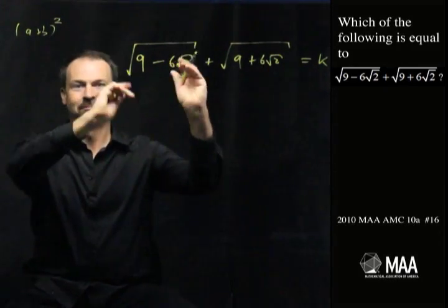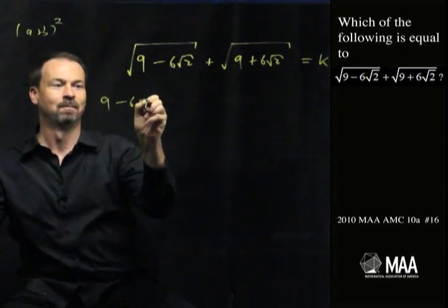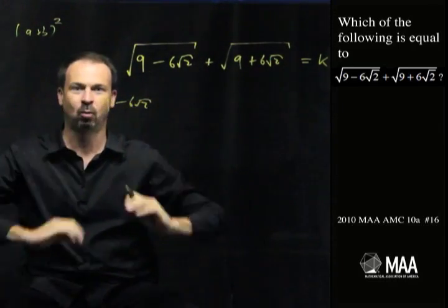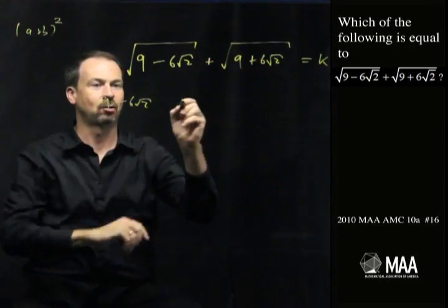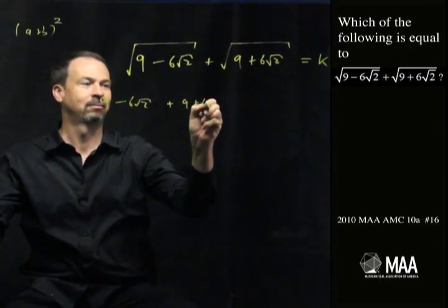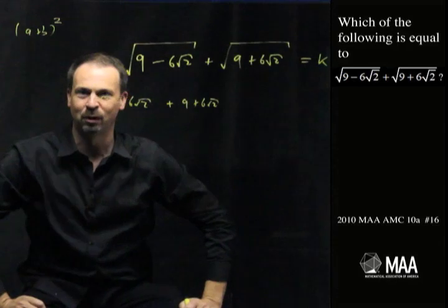First term squared. Fine. Makes the square roots go away. 9 minus 6 root 2. That's it. The square root squared is the quantity itself. Plus this guy squared. Oh nice. 9 plus 6 root 2. Just get rid of the square root sign. Just as my wishful thinking was hoping.